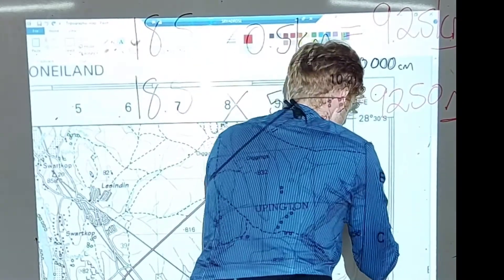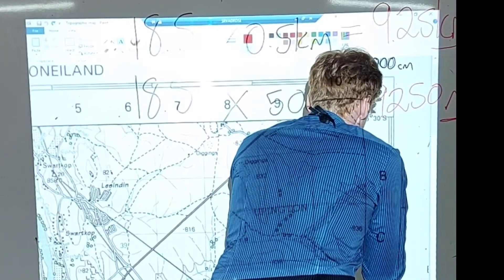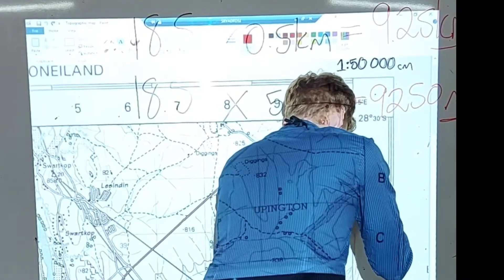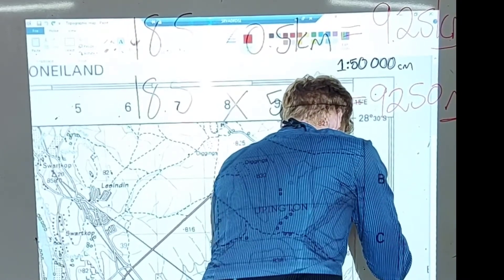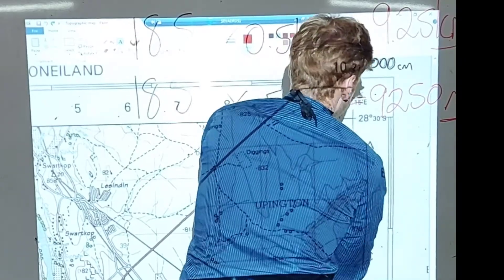And then with your fineliner, you just mark the area where you have ended off. Of course, I'm using my koki here, so my koki is smudging the piece of string.